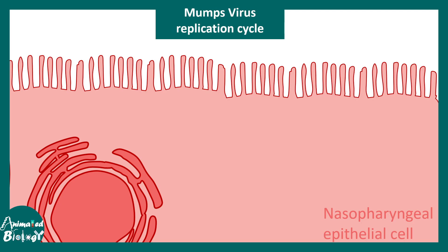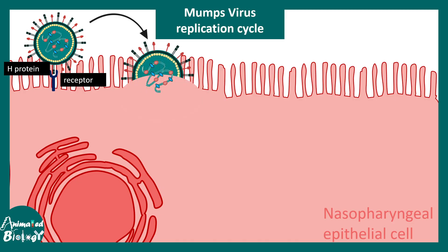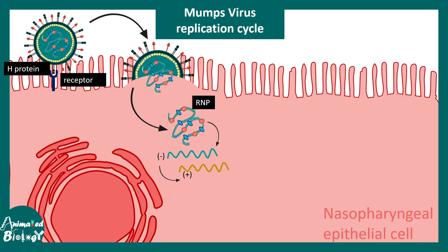Looking at the nasopharyngeal epithelial cell to understand the life cycle: the mumps virus interacts with specific receptors on the cell surface, and the fusion protein augments its fusion with the host cell. The envelope fuses with the cell membrane, the ribonucleoprotein is released, and the negative-sense RNA gets replicated via an intermediate positive-sense RNA.